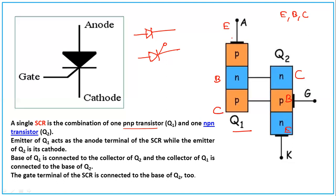So the emitter of Q1 is the anode; the base of Q1 and collector of Q2 are the same node; the collector of Q1 and base of Q2 are the same node; and the N-type emitter of Q2 is the cathode. That is how we get the PNPN structure. This is the two-transistor analogy, which we will be studying in detail.